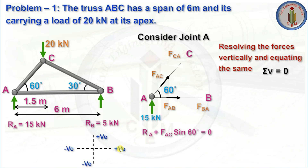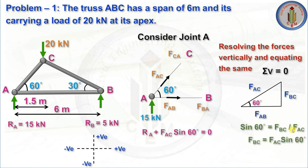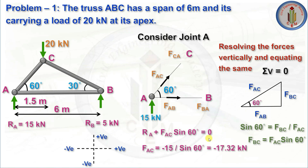Using the sign convention — positive x, positive y, negative x, negative y — and basic trigonometry: sin60 = FBC / FAC, so FBC = FAC sin60. Applying RA + FAC sin60 = 0 and substituting RA = 15 kN, we get FAC = −17.32 kN. Since we get a negative value, our assumption was incorrect — member AC is actually in compression.